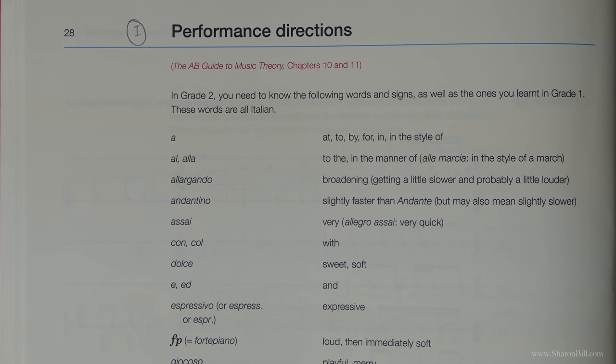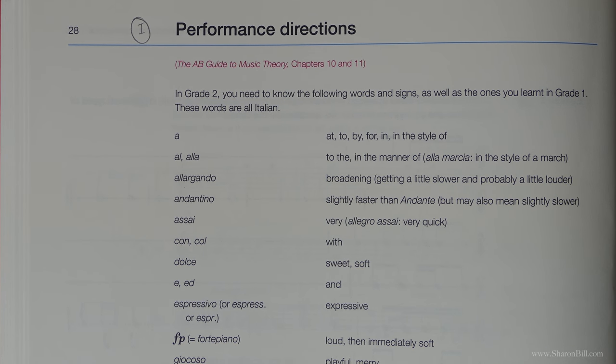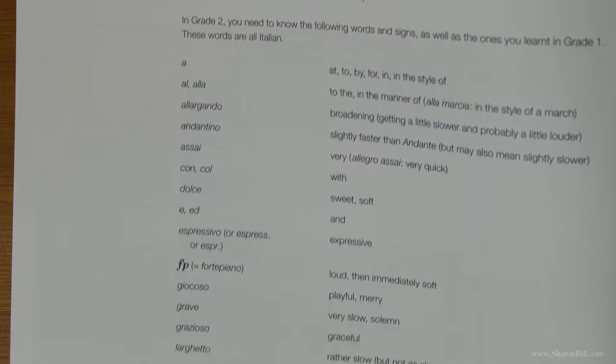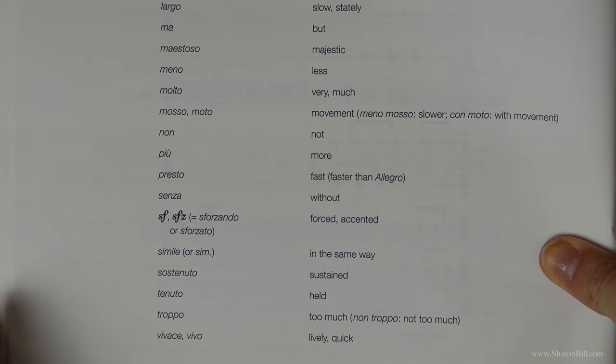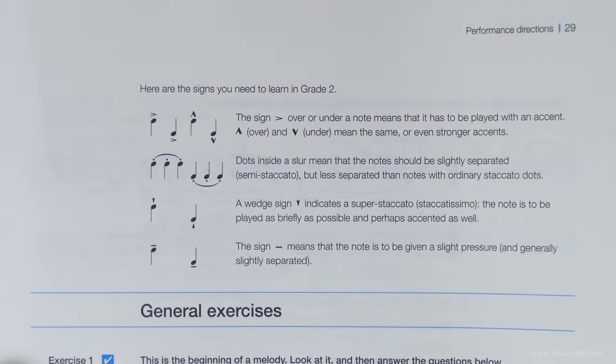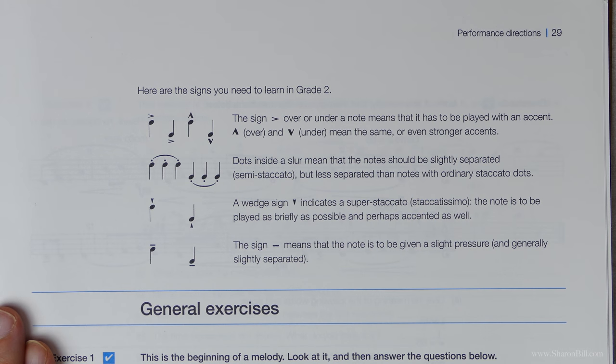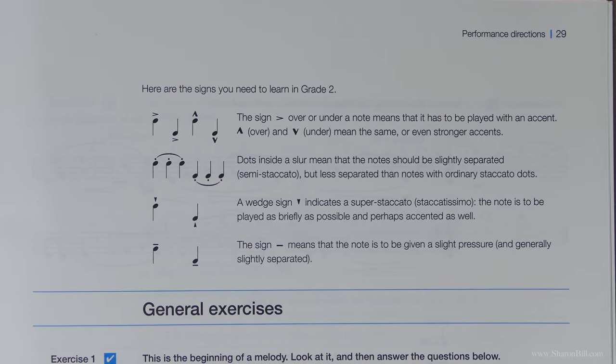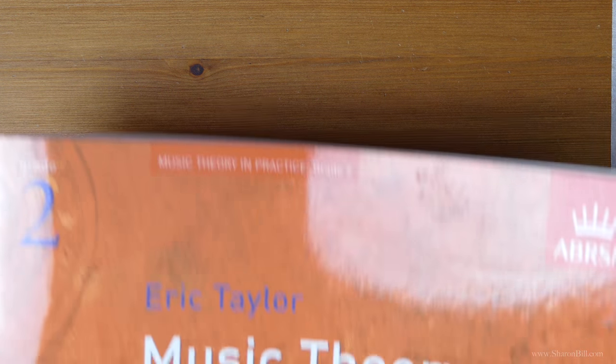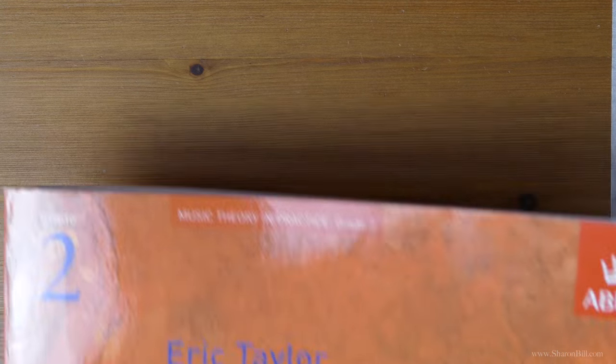Please do remember that all of these performance directions on page 28 and also over onto page 29 — there are some articulation marks as well — these are in addition to everything that you covered in Grade 1. So you need to go back to your Grade 1 Music Theory and Practice workbook.